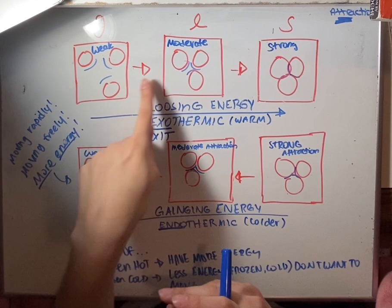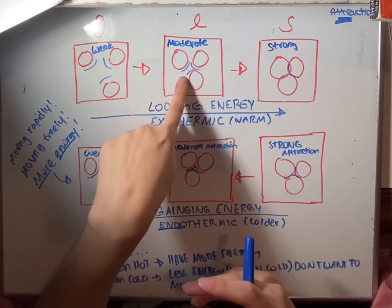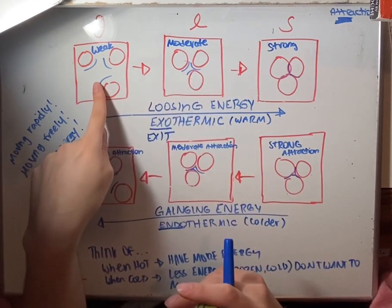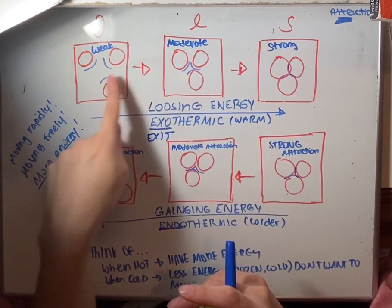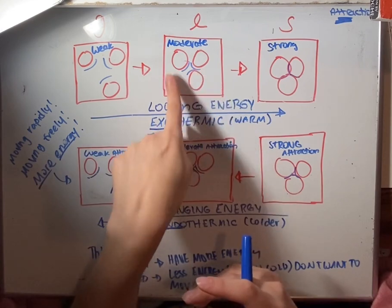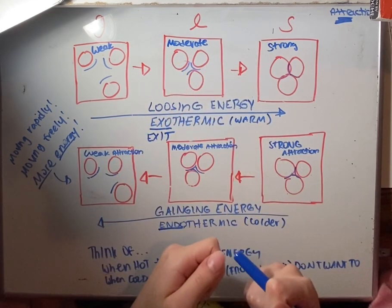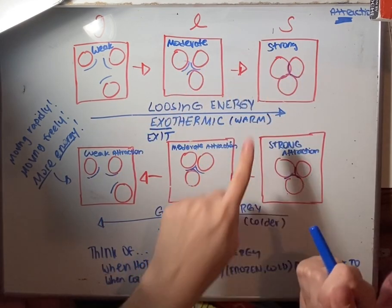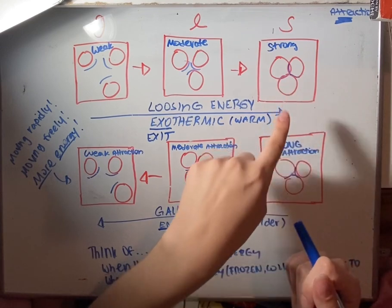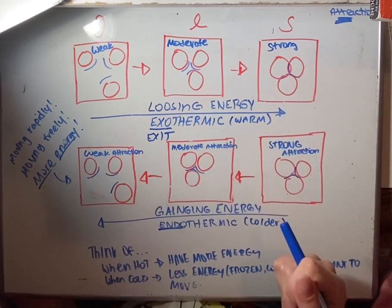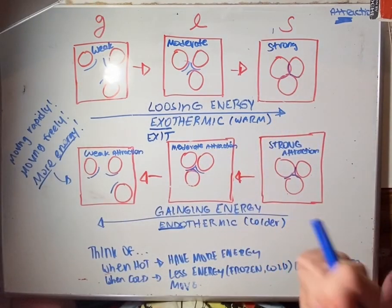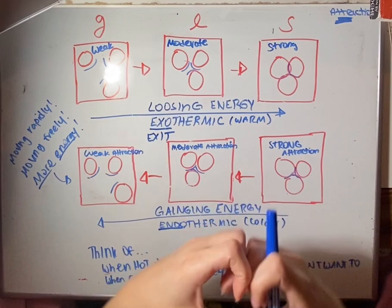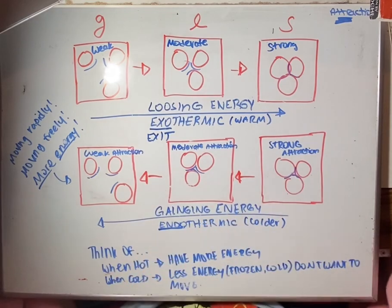When you go to a liquid, you can see that the attraction is moderate — it's definitely stronger than the gas. That means the particles are closer together. And then if you go to a solid, you can see that the attraction is very strong, meaning the particles are actually very closely packed together.